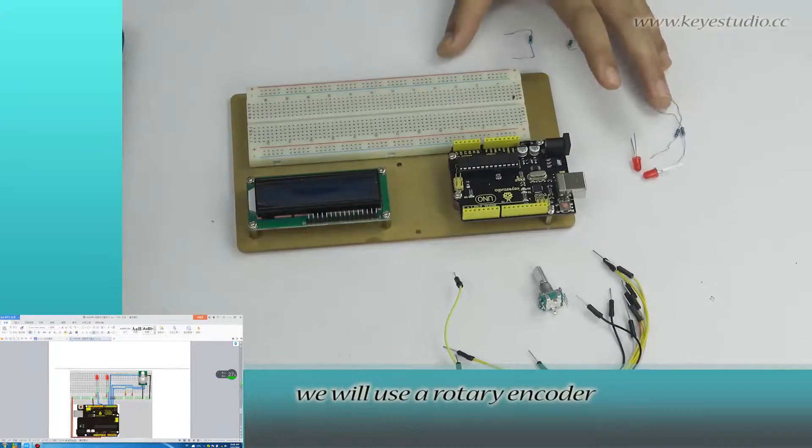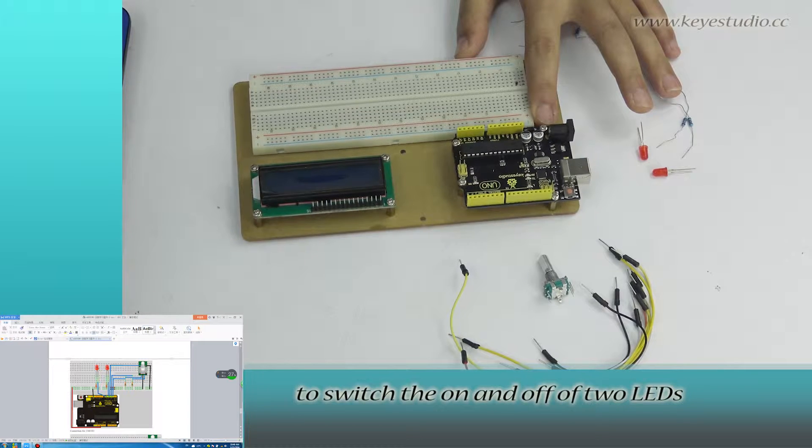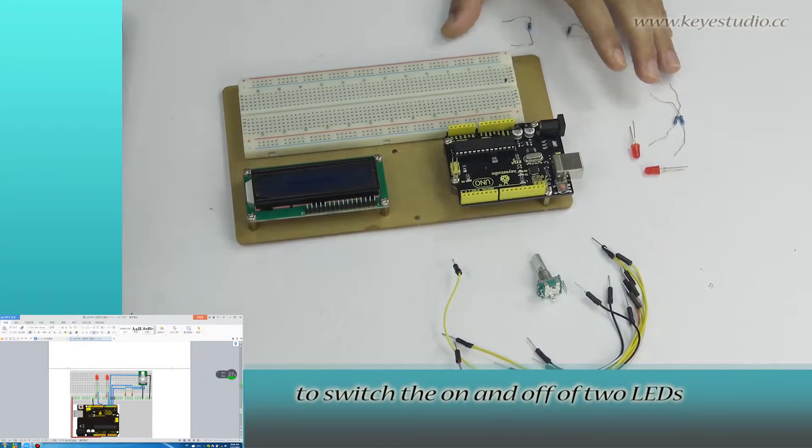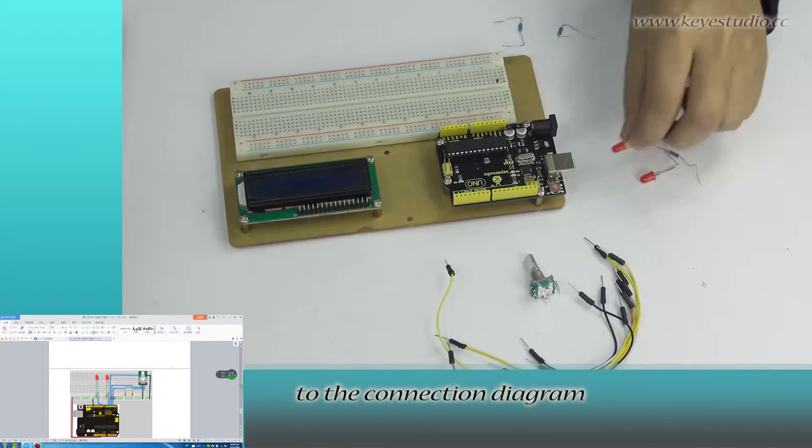In this lesson, we will use a rotary encoder to switch the on and off of two LEDs. First, let's do the wire connection according to the connection diagram.